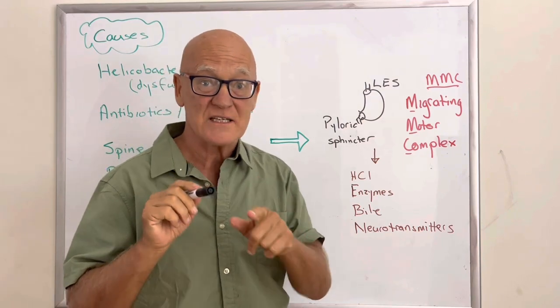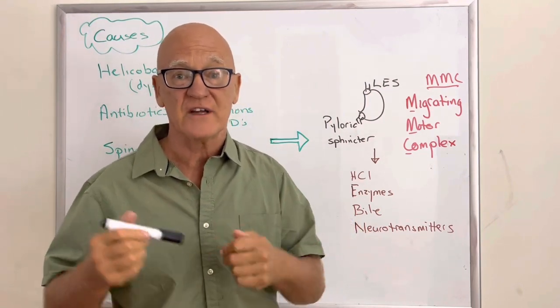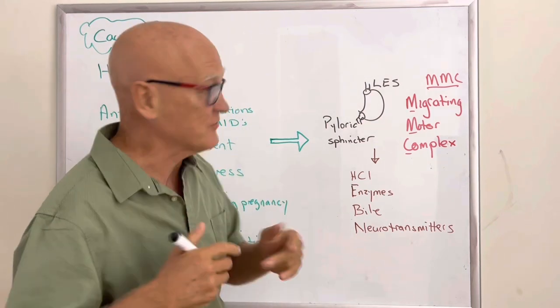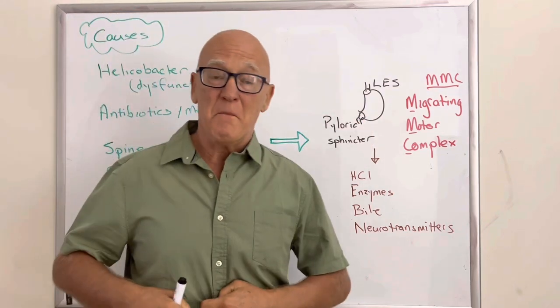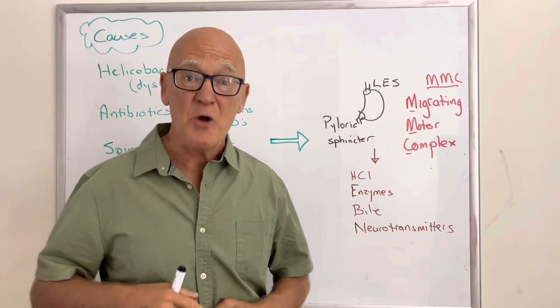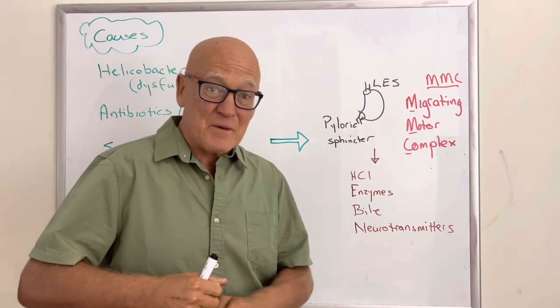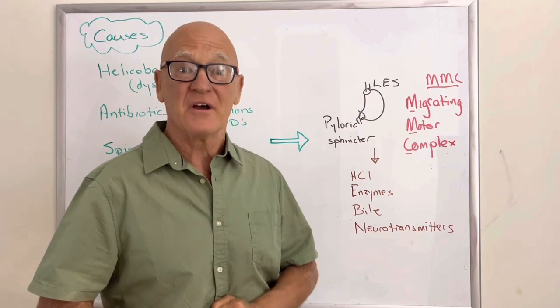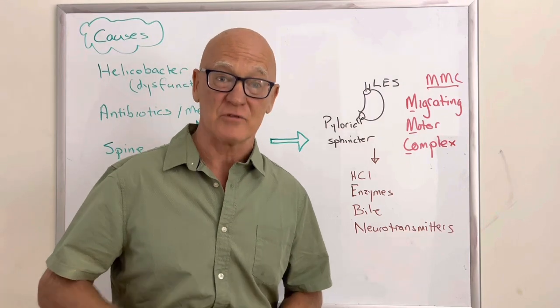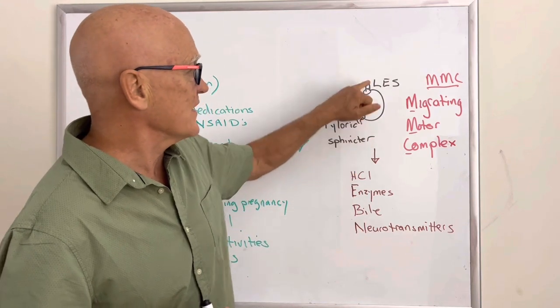From a physical perspective, what happens is you've got two sphincters, two rings of muscle, one at the top of your stomach called your lower esophageal sphincter, LES. You've got one at the bottom called your pyloric sphincter, which means acid or fire sphincter. These hopefully control the movement of everything out of your stomach and into your stomach.